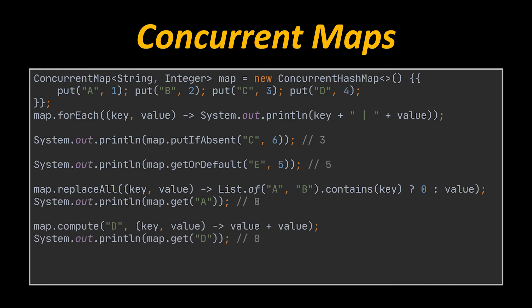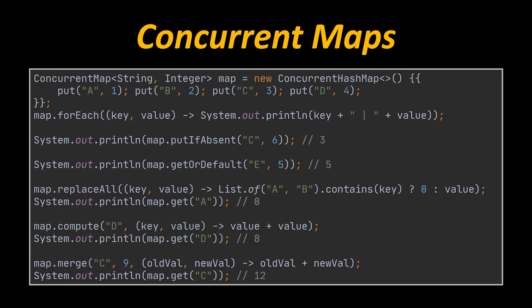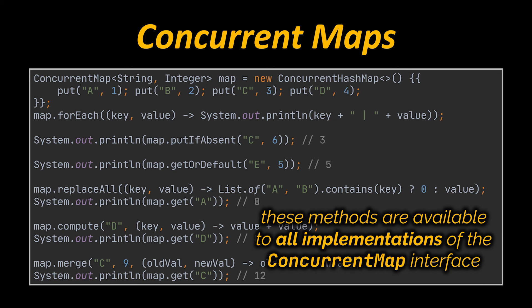The compute method lets us transform a single entry; it accepts a key and a BiFunction to specify the transformation of the corresponding value. The merge method can be used to unify a new value with an existing value in the map; it accepts a key, the new value to be merged, and a BiFunction to specify the merging behavior of both values. All these methods are part of the ConcurrentMap interface and are available to all its implementations.